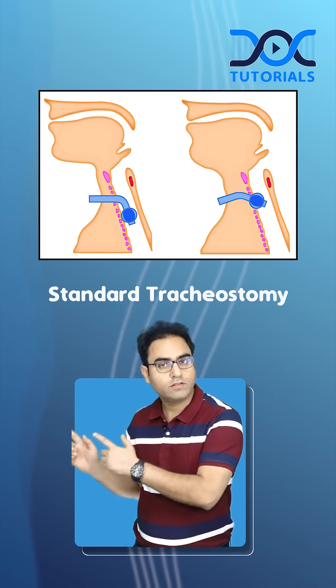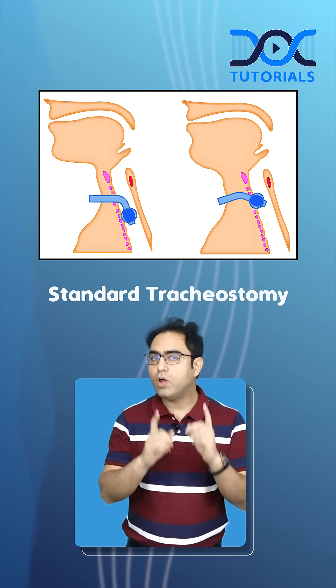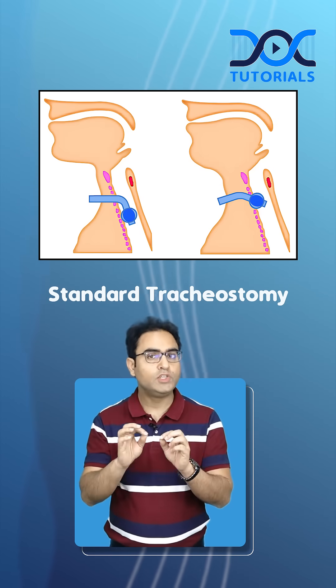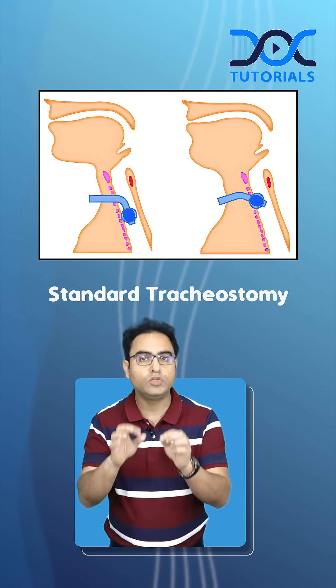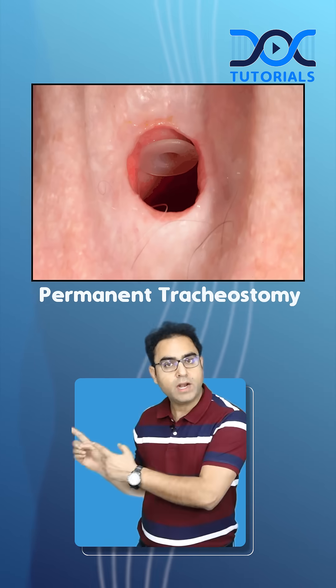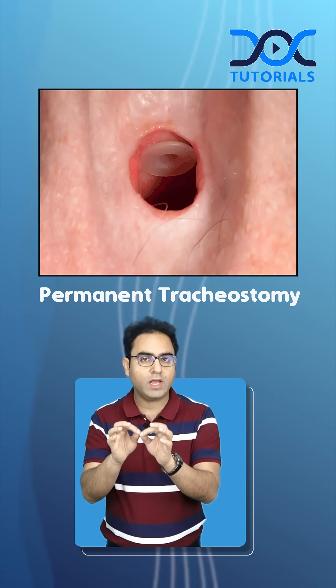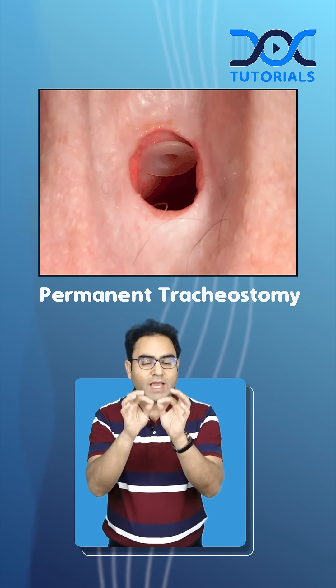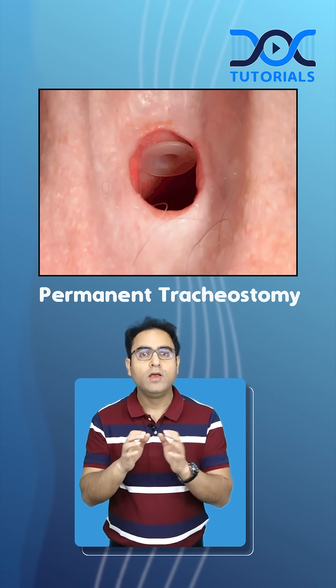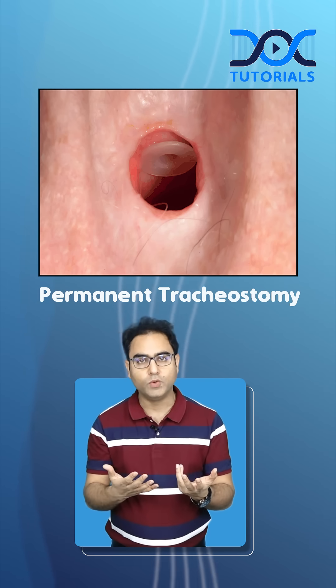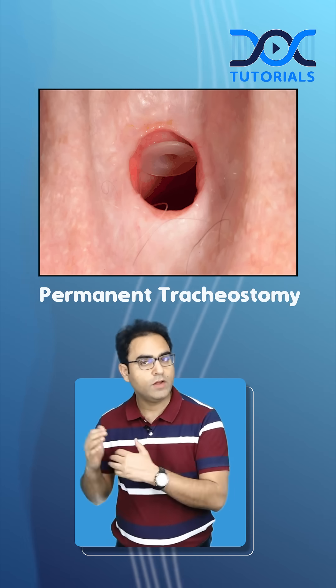How do we differentiate between a permanent tracheostomy and a standard tracheostomy? In a standard tracheostomy image, you will always see the tracheostomy tube in situ. But in a permanent tracheostomy, because the edges of the trachea are sutured to the skin of the neck, you need not put the tracheostomy tube. That is how we differentiate.